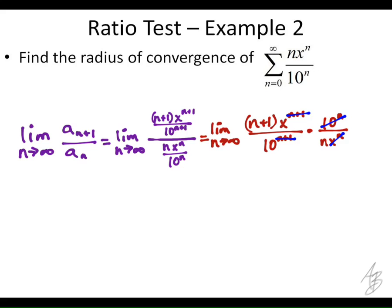So this limit now, in its simplified version, will look like this. We're going to take the limit as n approaches infinity of x times n plus 1 over 10 n.